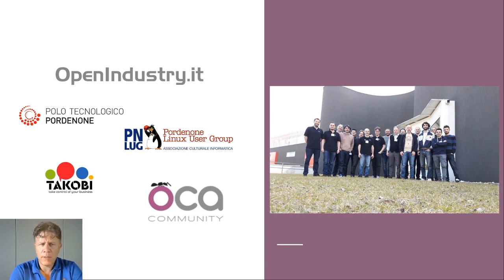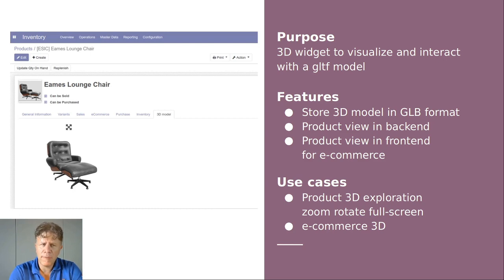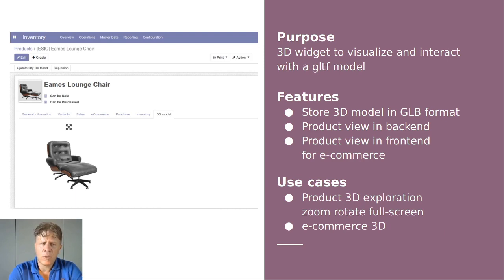A demo was developed using Three.js loader for STL model. This year, in May, during the COVID lockdown, we found the Google Model Viewer and decided to develop a widget to use the Model Viewer inside the Odoo Backend and Frontend. In the Backend product form view, a new tab visualizes the 3D model with a full screen option. In the Frontend eCommerce, if a product has a 3D model, the widget visualizes it instead of the image.